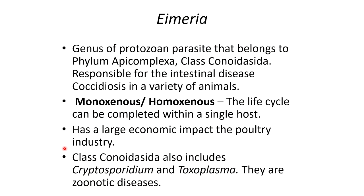Eimeria is a genus of protozoan parasites that belongs to the Phylum Apicomplexa, class Conoidasida. Eimeria is responsible for the intestinal disease coccidiosis in a variety of animals. It is a monoxenous organism, meaning the life cycle can be completed within a single host. It has a large economic impact on the poultry and cattle industries, and is also a common disease in kittens and puppies.